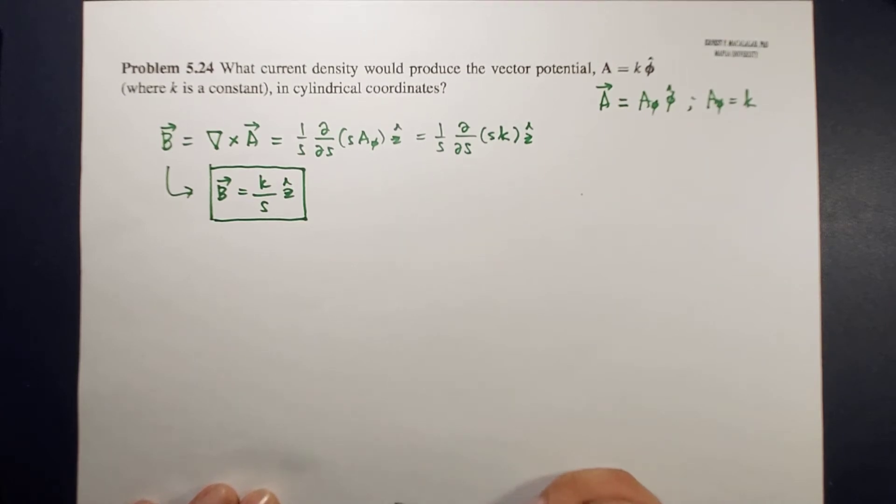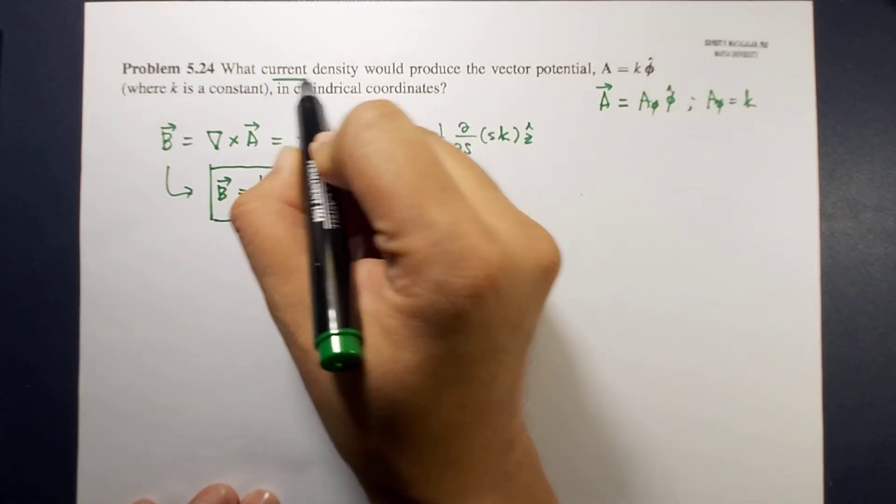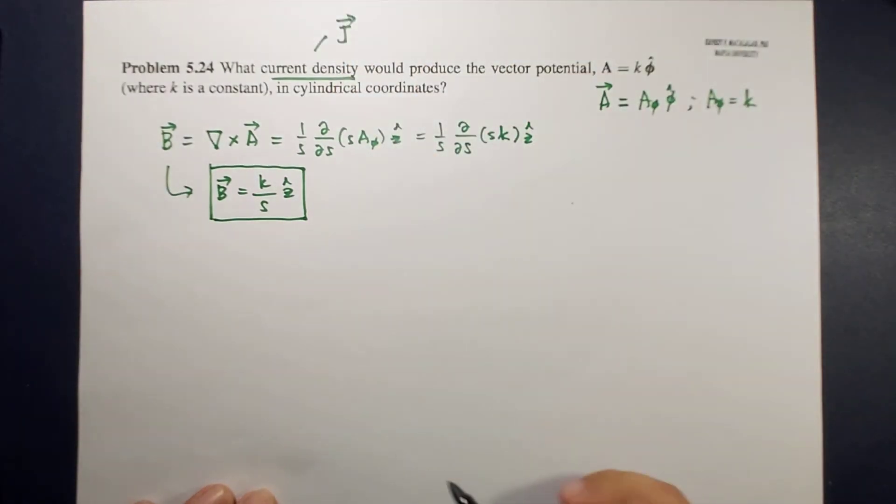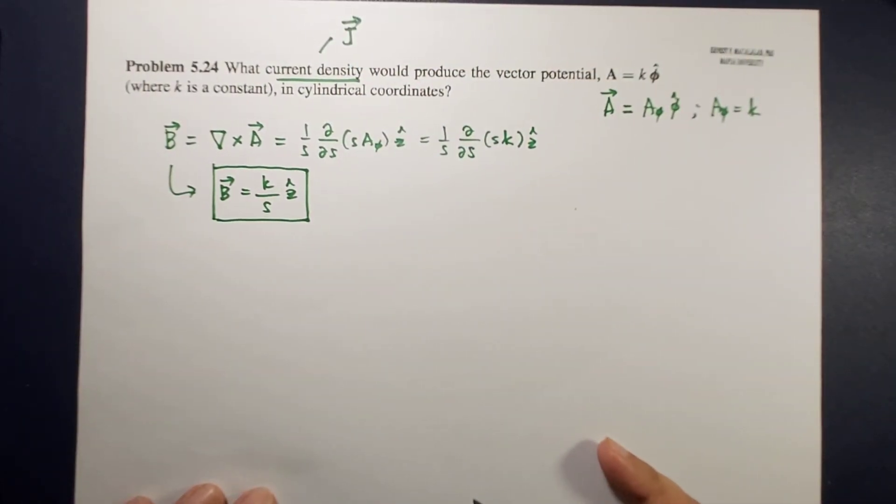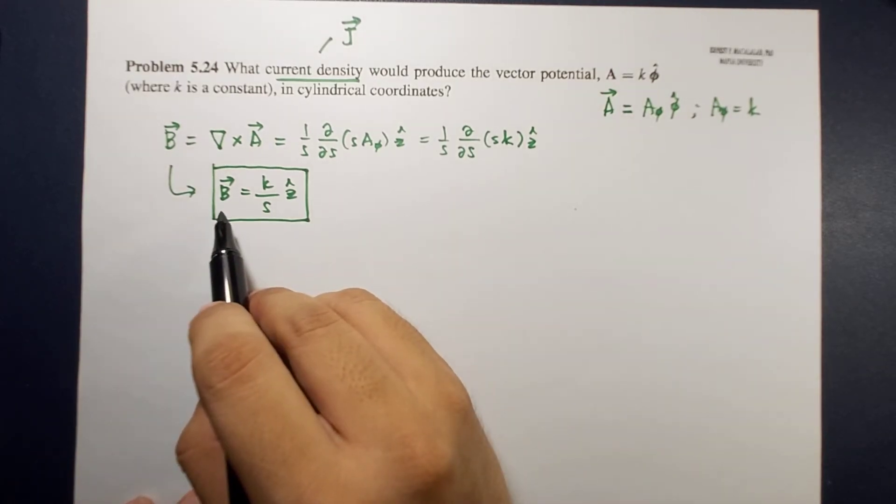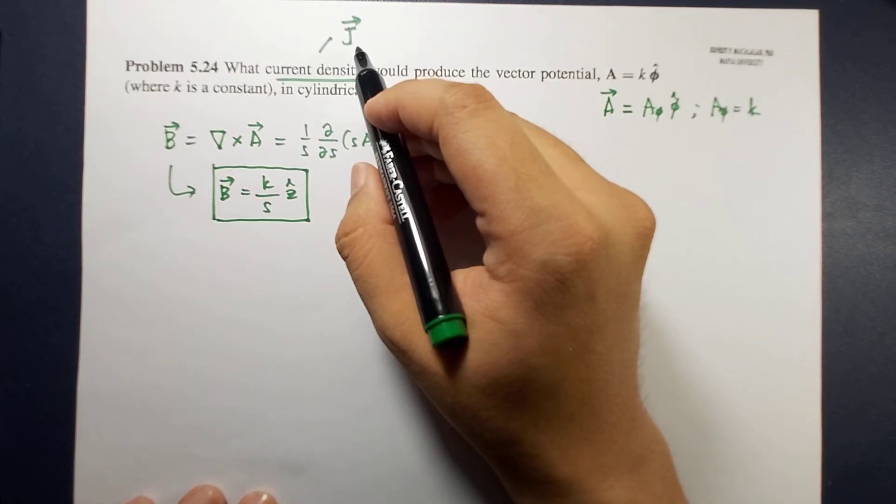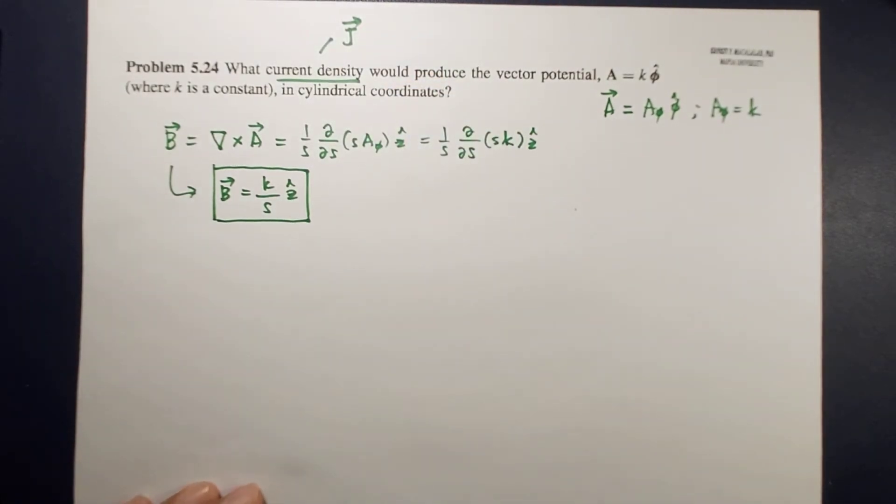Now, how do we get the current density? Remember that your current density is j. We already have your magnetic field, and you want to calculate the current density.